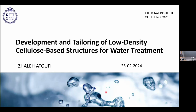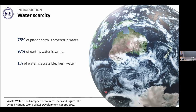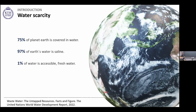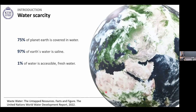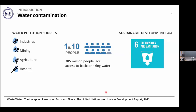Although 75% of planet Earth is covered with water, the world still has a water scarcity problem, because only less than 1% of this water is accessible fresh water. The rest is either salt water in the ocean or in the form of ice in glaciers. In addition to water scarcity, we have water contamination — industrial and mining discharges, agricultural input, hospital and city waste all contribute to water pollution. According to a UN report, around 800 million people worldwide — one in every ten — lack access to basic drinking water.